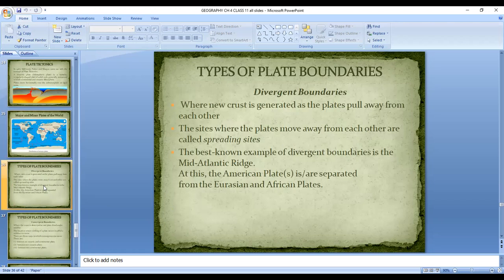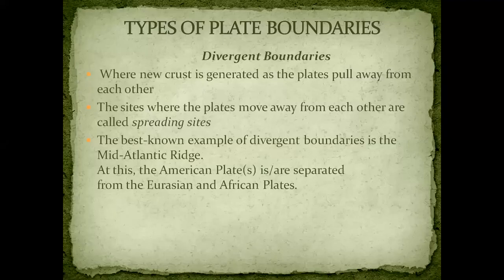We have studied about these plate boundaries in our earlier classes, so this will be a revision with a little more information. There are three types of plate boundaries: divergent, convergent, and transform. Let us first talk about the divergent boundary — what happens is new crust is generated as the plates move away from each other.